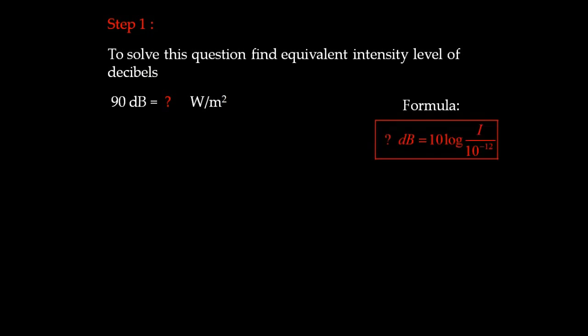We have the formula: decibel level equals 10 times log of (I divided by I₀), where I₀ is 10 to the power of minus 12 watts per meter squared. Substituting 90 decibels: 90 = 10 × log(I / 10⁻¹²).